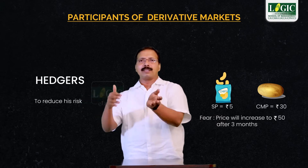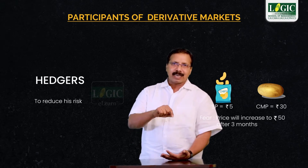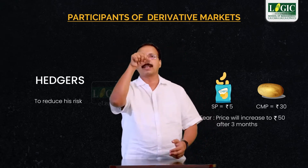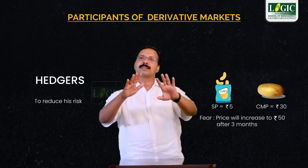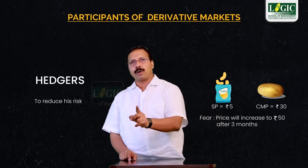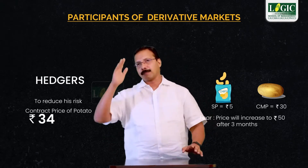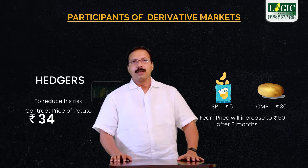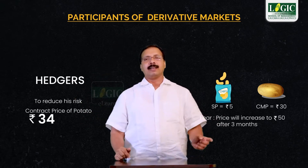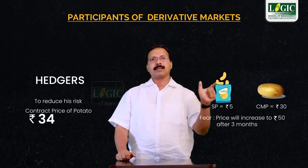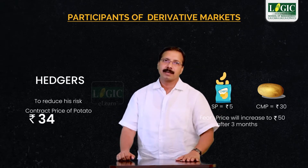So they are not frequently changing their output price. If this potato price increases from 30 to 50 after three months, it will definitely affect the margin of their product and the margin of this company. So they enter a future contract for the purchase of potato at 34 rupees after three months with a farmer. After three months, even if the market price increases to 50, they will be getting this potato at the rate of 34 and will almost be able to maintain their margin. This is hedging.